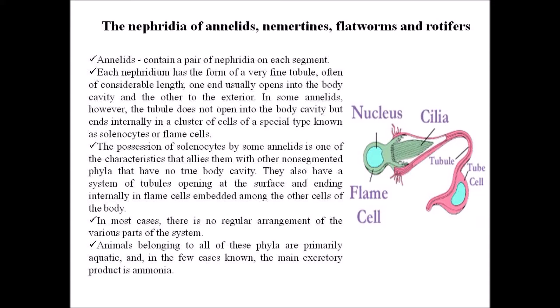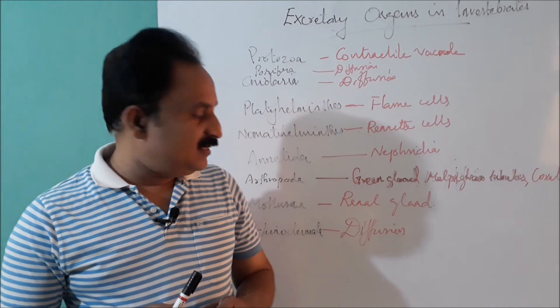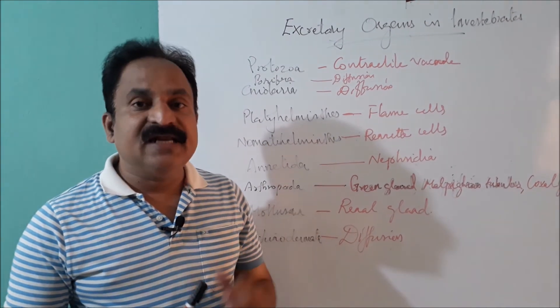In most cases, there is no regular arrangement of the various parts of the system. Animals belonging to all these phyla are primarily aquatic and in the few cases known, the main excretory product is ammonia.